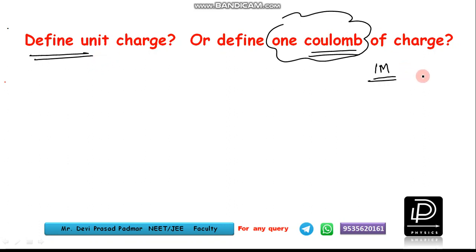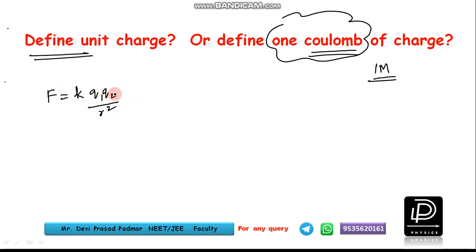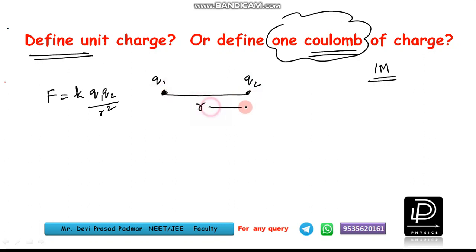So how can you define unit charge or one coulomb charge? In the last session we discussed Coulomb's law. We got an expression for the electrostatic force between any two stationary charges separated by a certain distance in vacuum. That force is given by F = k × q1 × q2 / r², where q1 and q2 are the magnitudes of the charges and r is the distance of separation.